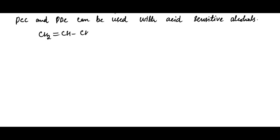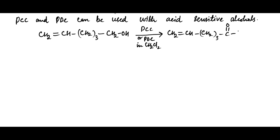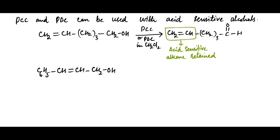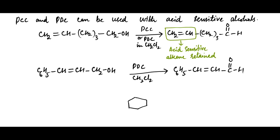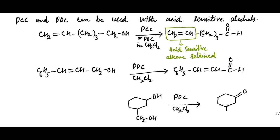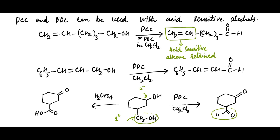For example, this alcohol containing an unsaturation, on treatment with PCC or PDC, oxidizes the alcohol group into an aldehyde group while the acid-sensitive alkene is retained. Similarly, this allylic alcohol on treatment with PDC changes the hydroxyl group into an aldehyde group without affecting the alkene double bond. Consider this alcohol: in the presence of PDC, the secondary hydroxyl group is oxidized into a ketone and the primary hydroxyl group is oxidized into an aldehyde. In the presence of chromic acid, the secondary hydroxyl group is oxidized into a keto group and the primary hydroxyl group is oxidized into a carboxylic group, due to over-oxidation of the primary alcohol.